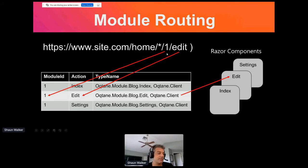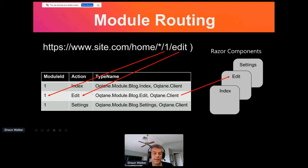Module routing — the ability to define additional parameters you can pass to components in your module to surface different user interfaces — works the same way as in DNN. The same approach where you have a module ID in the URL and a control key gets mapped back to the database telling the framework which component needs to be rendered. This is all dynamic, all stored in the database the same way DNN worked. When you build out your pages through the portal UI framework, it creates all this configuration data in the database same as DNN, then surfaces things dynamically.